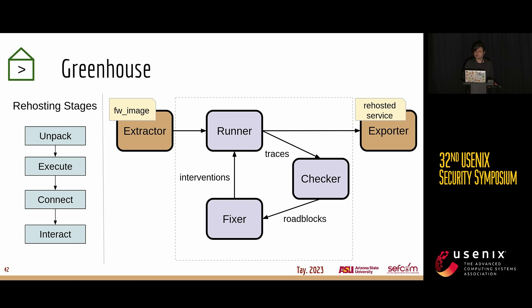Greenhouse takes an iterative approach to re-hosting. After extracting a firmware image, we place it inside a runner that emulates and runs the firmware image. This generates traces that are passed to a checker, which uses these traces to find issues impeding the re-hosting of a given firmware service — returning roadblocks. The fixer takes these roadblocks, applies corresponding interventions to the binaries and emulation environment, and passes it back to the runner. The whole thing repeats, driving the firmware services of interest through what we term the four stages of re-hosting: unpacking the firmware image, executing the firmware services of interest, connecting to these web services, and finally interacting with these firmware web services.